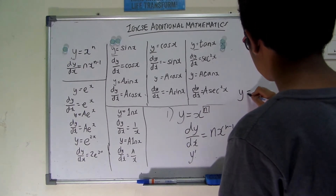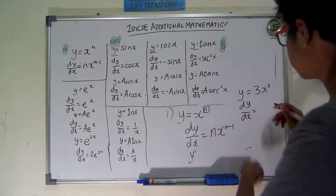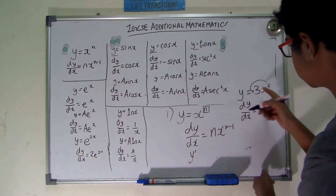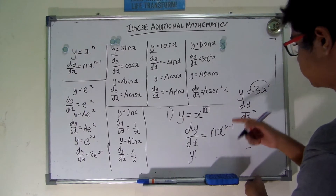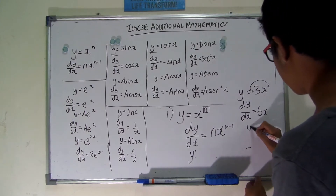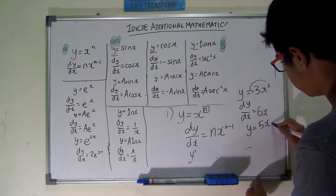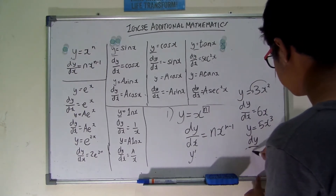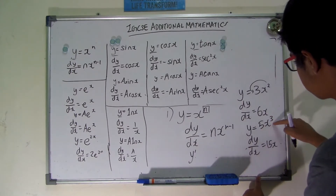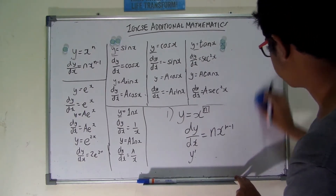For example, if y equals 3x², then dy/dx equals 2 times 3, which is 6x. And if y equals 5x³, then dy/dx equals 3 times 5, which is 15x², because the exponent is subtracted by one.